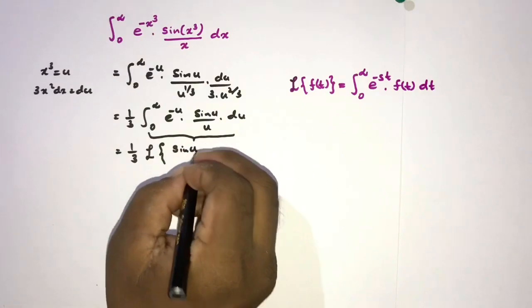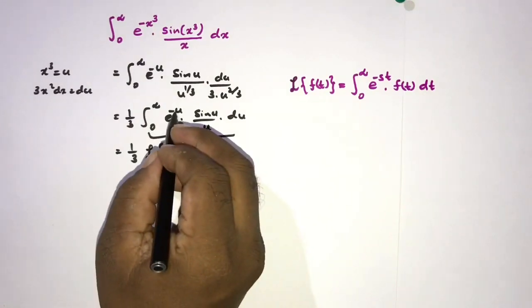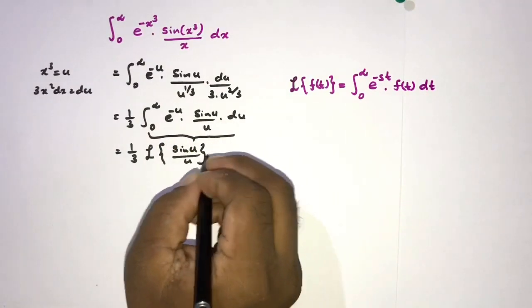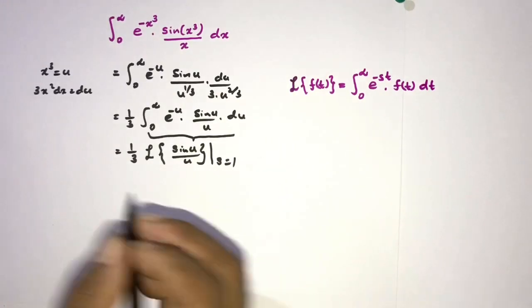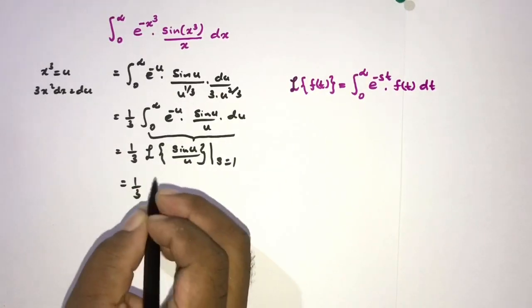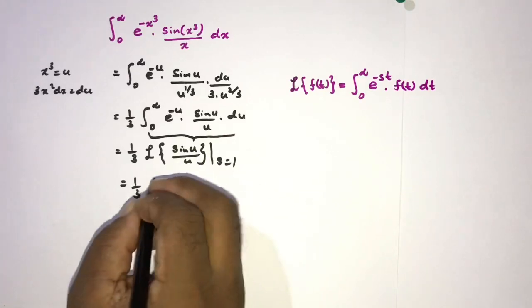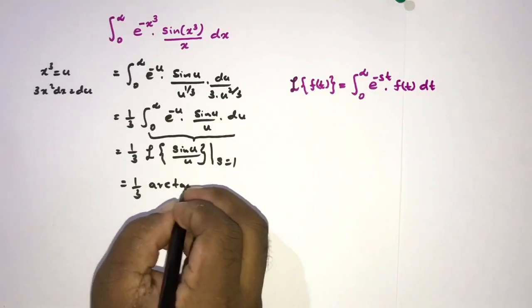Here we have e^(-u), so here when s equals 1. Okay, now we know the Laplace transform of sine of u over u is equal to arctan.